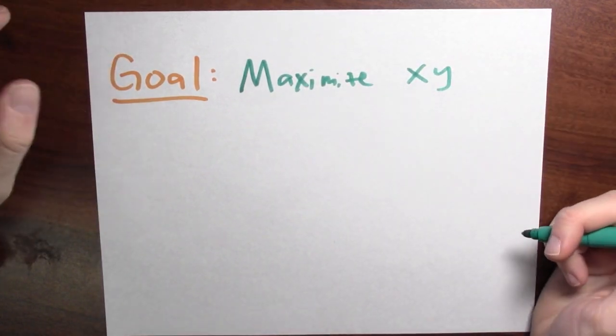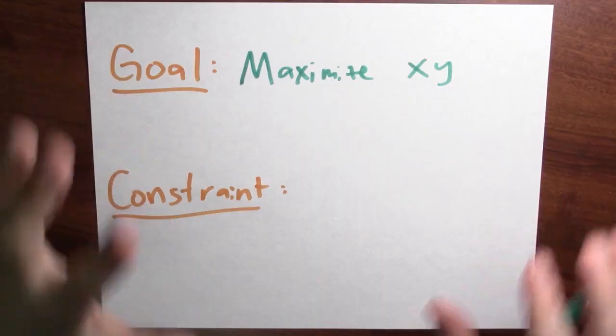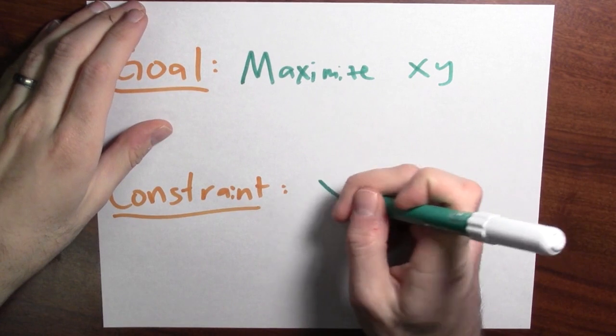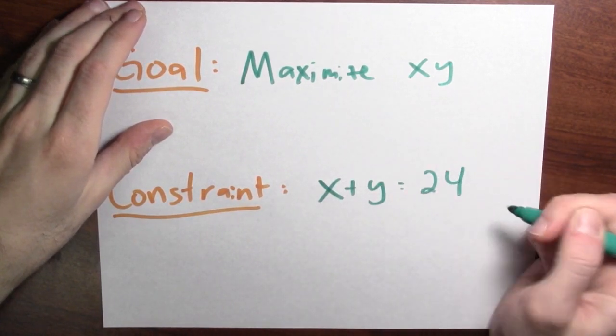And there's a constraint. The constraint is that x and y have to add up to 24. So I'll write that as x plus y equals 24.